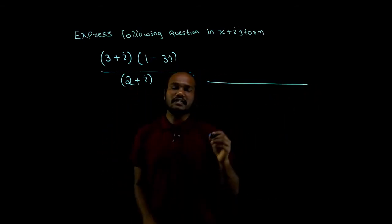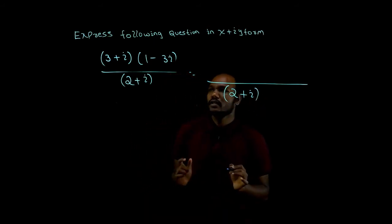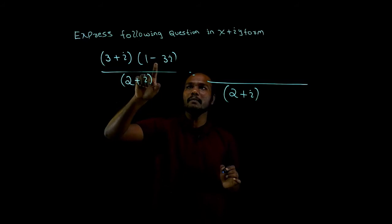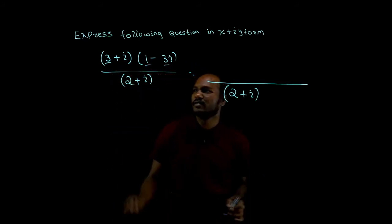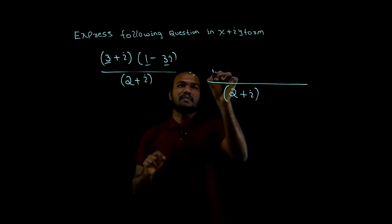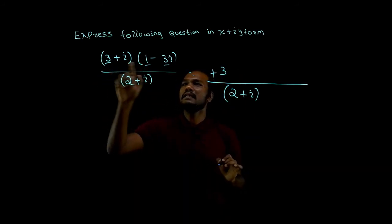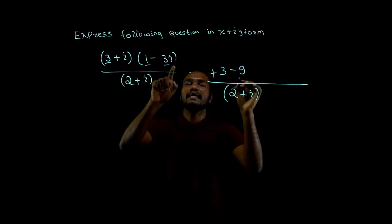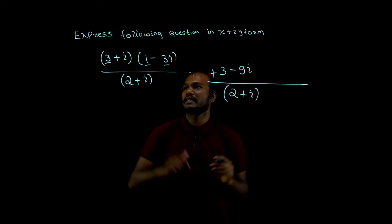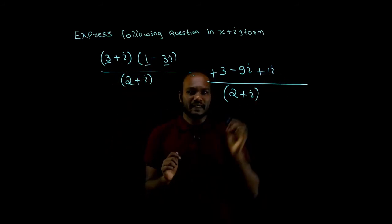First take the denominator as it is. Next, in the numerator we have 3 plus i, here 1 minus 3i. Take one number, multiply with this and also with this. So plus into plus is plus, 3 into 1 is 3. Plus into minus is minus, 3 into 3 is 9i. Next, plus into plus is plus, i into 1 is 1i. Plus into minus is minus, i into i is i square.